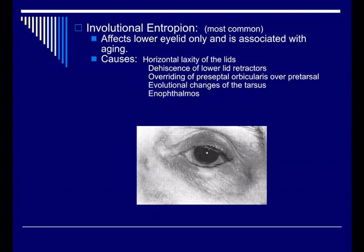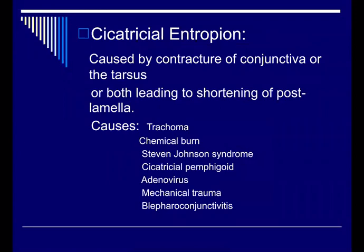In involutional entropion, it affects the lower lid only and is associated with aging. There will be horizontal laxity of the lid, dehiscence of the lower lid retractors, and overriding of the preseptal orbicularis over the pretarsal orbicularis. There will also be involutional changes of the tarsus and enophthalmos. Sometimes enophthalmos also causes entropion. Patients with entropion, especially the elderly, will come to clinic complaining of irritation, tearing, and foreign body sensation. You have to examine thoroughly — check the lid position, the lashes, where they are directed, and perform fluorescein staining.